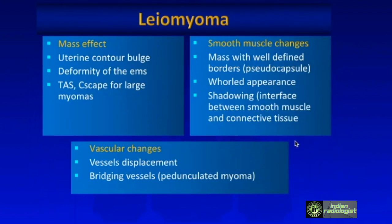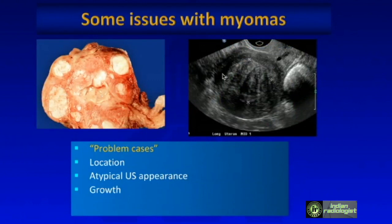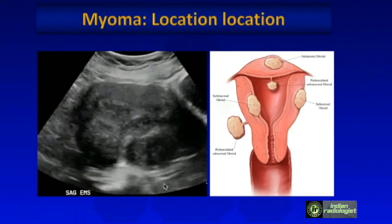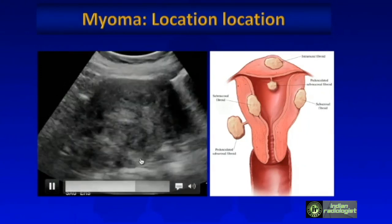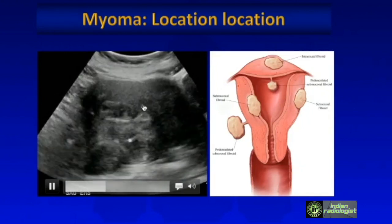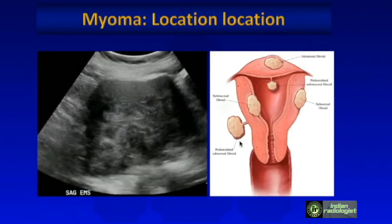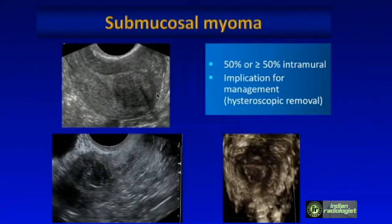Myomas cause mass effect, and the smooth muscle changes give a whorled appearance with shadowing due to fibrous tissue content, and vessels will be displaced. The classic diagnosis is straightforward, but the challenges are atypical ultrasound appearance, location, and growth. Location is key: subserosal, intramural — but the submucosal ones are most concerning because they cause the most clinical problems for patients.